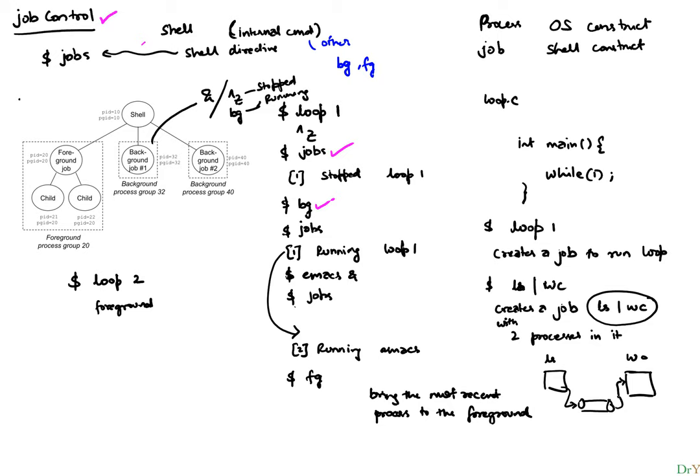It only comes out of the wait state when the event it's waiting for occurs. In this case, BG sends the process a SIGCONT, which says: you were stopped, sitting in the background — now I want you to continue running, but you still run in the background. So that's the idea of BG.